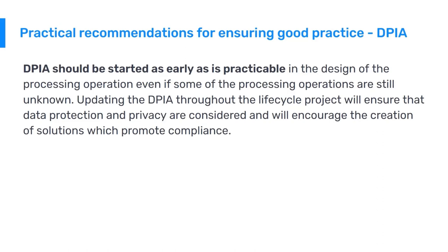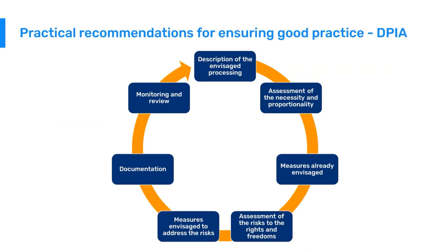A DPIA, as defined in the GDPR, is a process designed to describe the data processing, assess its necessity and proportionality, and help manage the risks to the rights and freedoms of people resulting from the processing of personal data by assessing them and determining measures to address them. DPIAs can be started as early as is practical in the design of the processing operation, even if some operations are still unknown, and updated throughout the lifecycle of the project. The DPIA cycle covers describing envisaged processes, assessing necessity and proportionality, assessing risks to rights and freedoms, defining measures to address those risks, documentation, and ongoing monitoring and review.